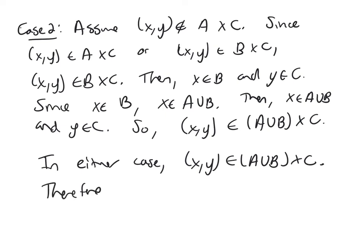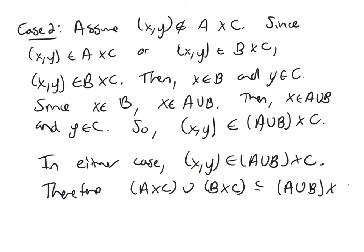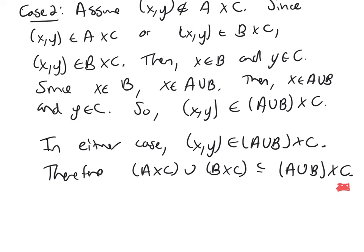Therefore, A cross C union B cross C is a subset of A union B cross C. I've completed the second part of my proof. And because we've completed the first and the second part of the proof, we've established that these two sets are equal.